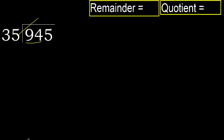35 multiplied by 3 is 105, which is greater. Multiplied by 2 is 70, which is not greater. Subtract: 94 minus 70 is 24.